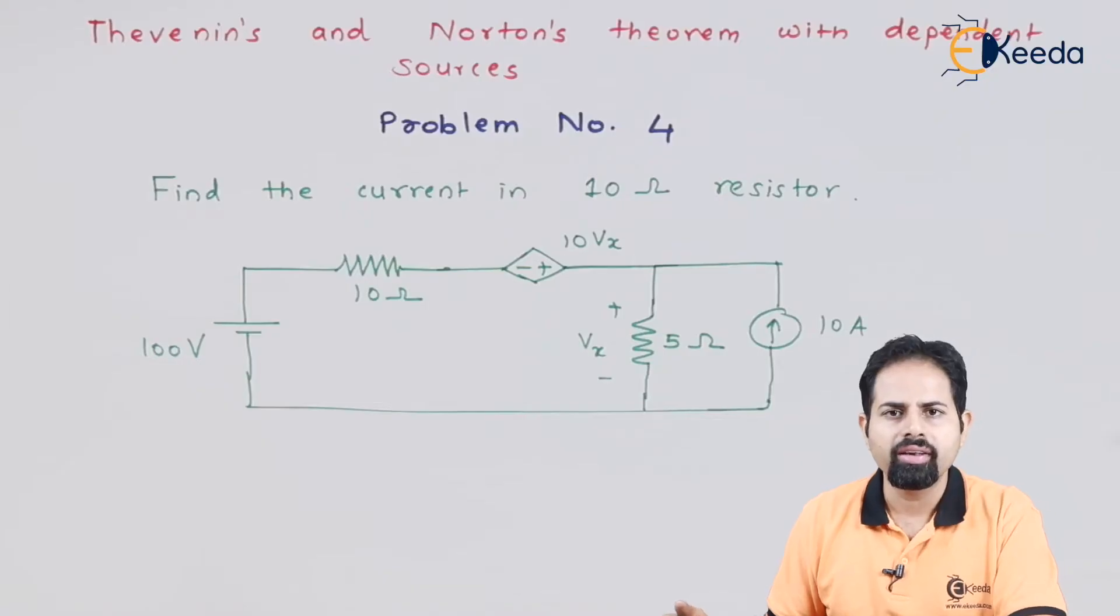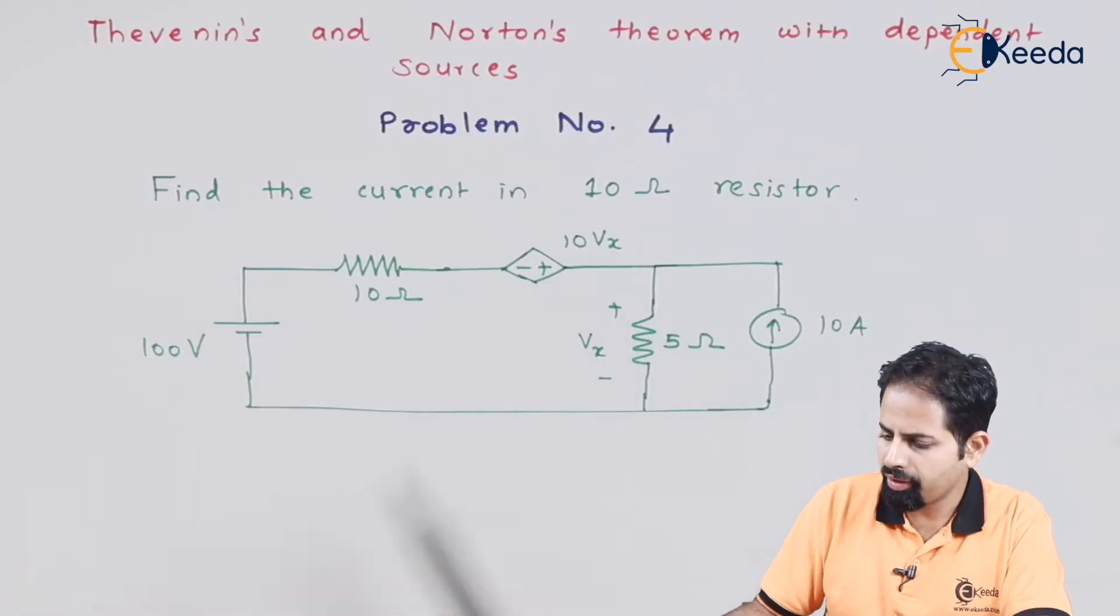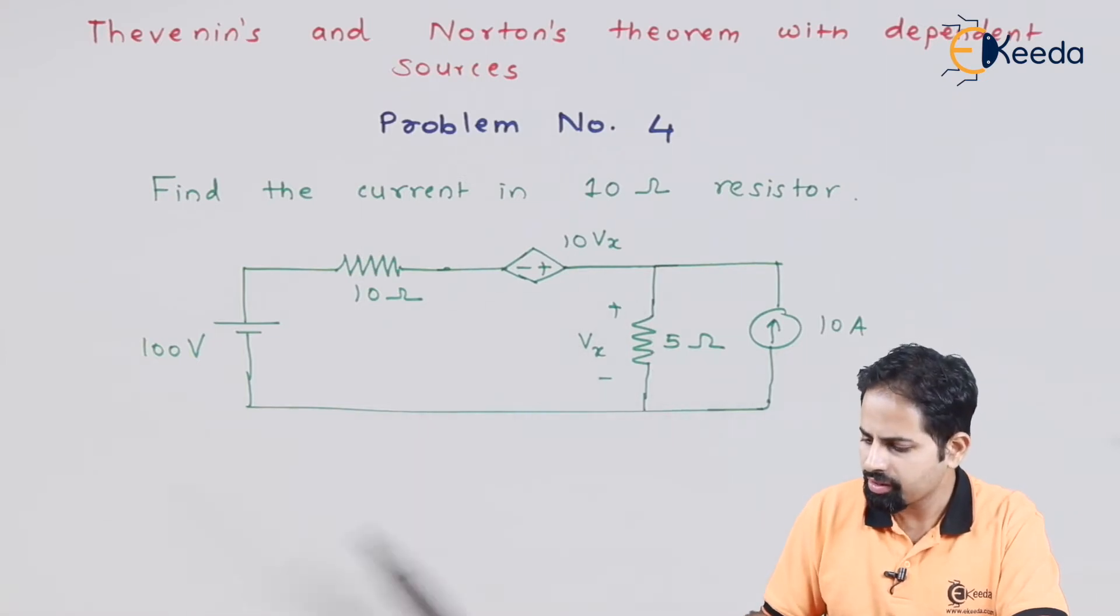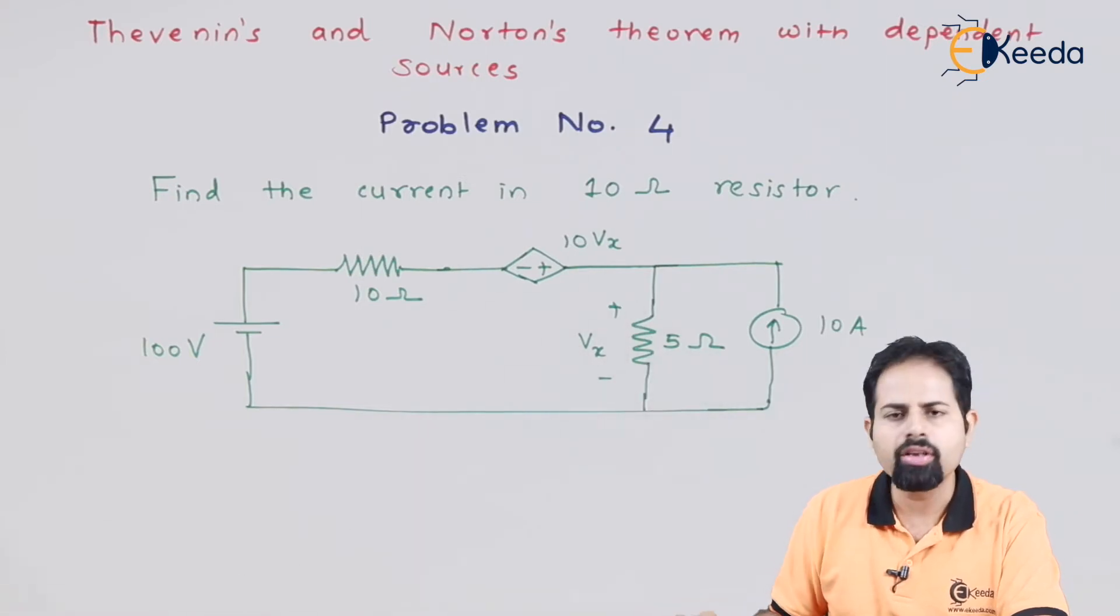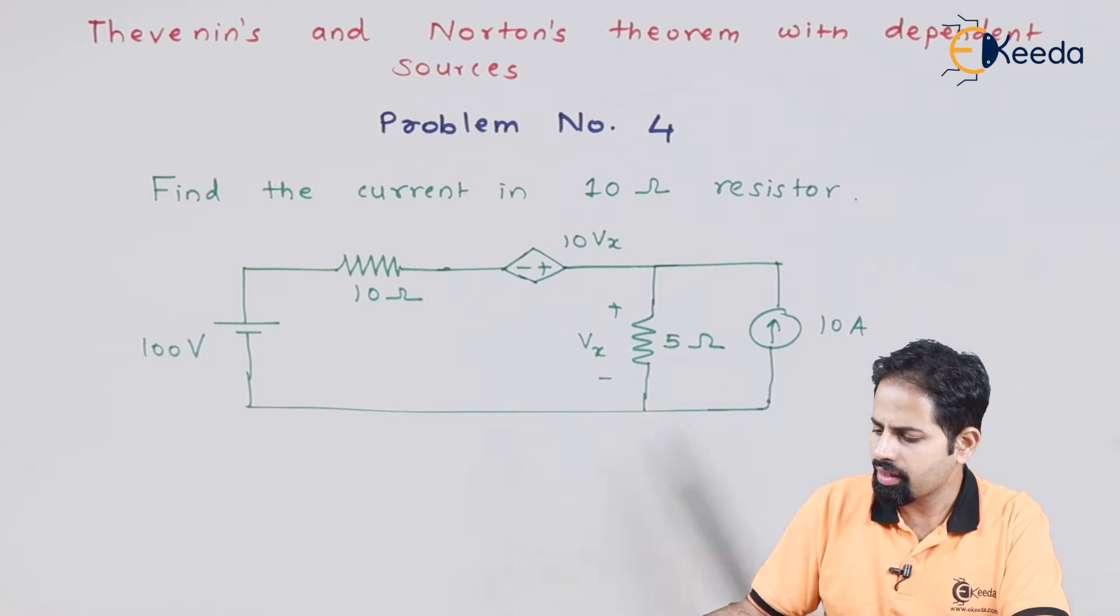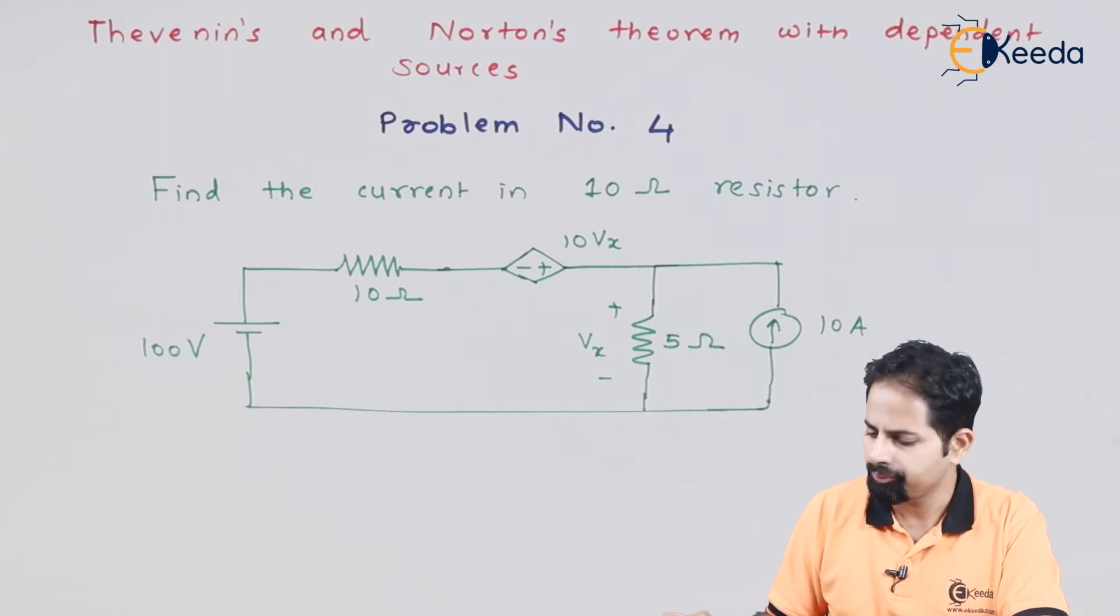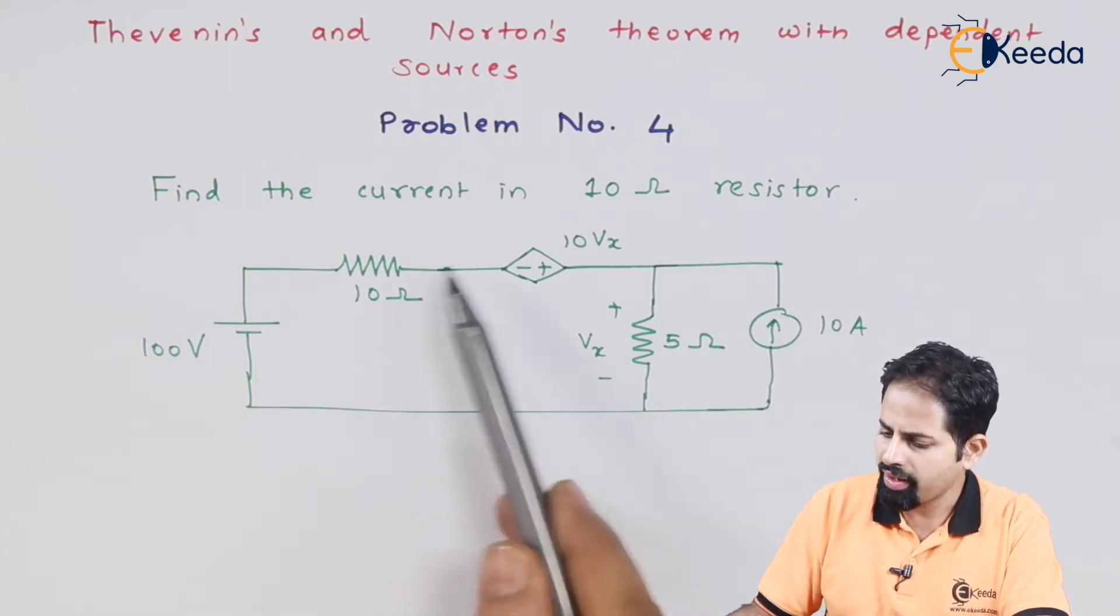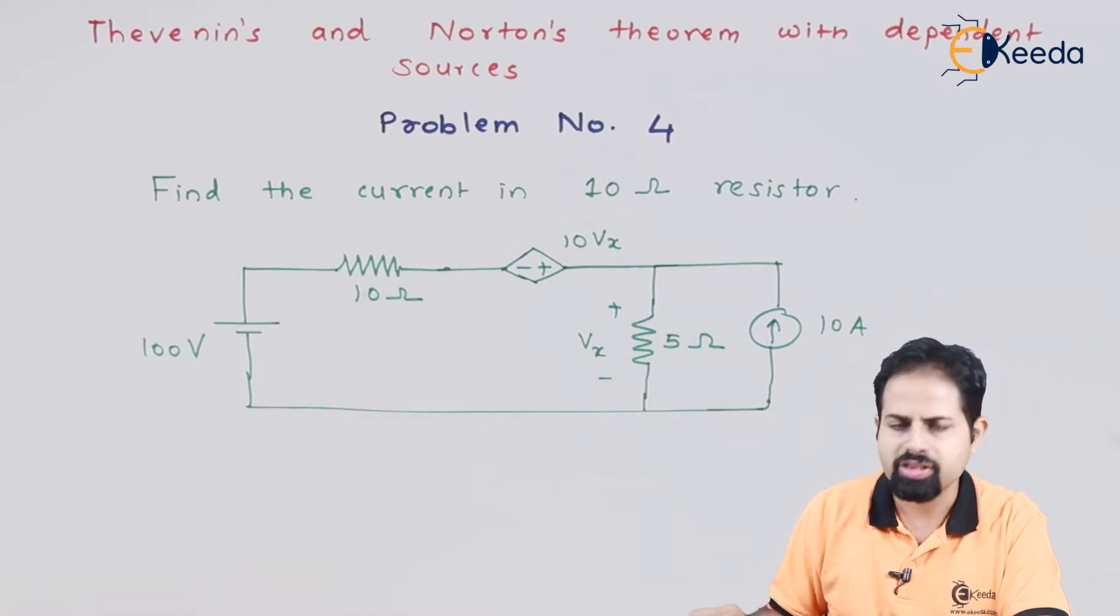So here is again another problem with a dependent voltage source of 10Vx, and Vx is a voltage across this 5 ohm resistor. There is a current source of 10 amperes, and we have to find the current in 10 ohm resistor. So what is the current across this 10 ohm resistor?